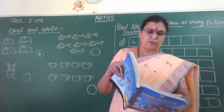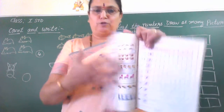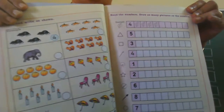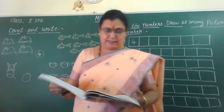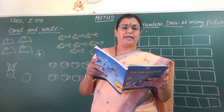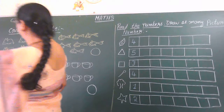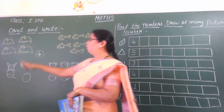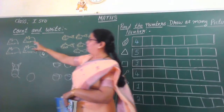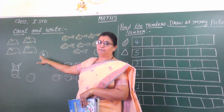Today we are going to count and write as shown. See, they have shown you pictures here. Can you see this? Open your textbook children. Keep your pencil with you. Page number fifty-four. First one, they are going to give an example. How many rats are there? Count. One, two, three, four. In this chapter they have written number four.